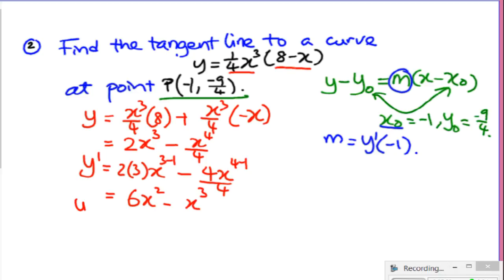Now I need to evaluate it at negative 1. That will be 6 times negative 1 squared, minus negative 1 raised to the power of 3. That becomes 6 minus, minus becomes plus, so I'm going to have a gradient of 7.